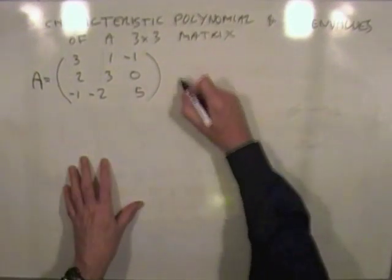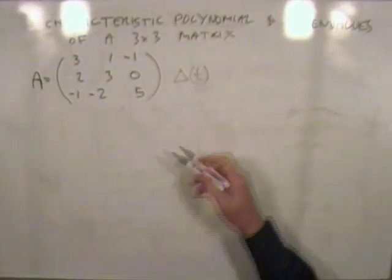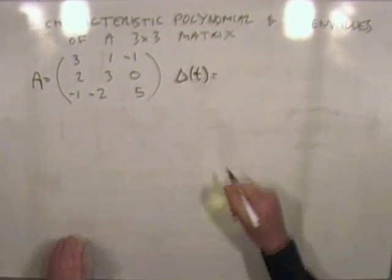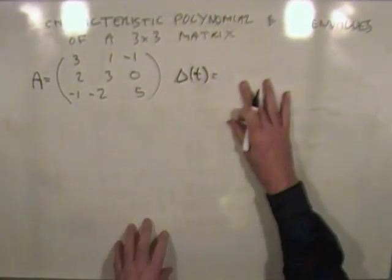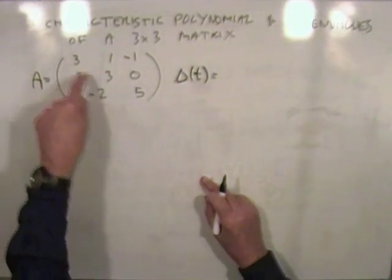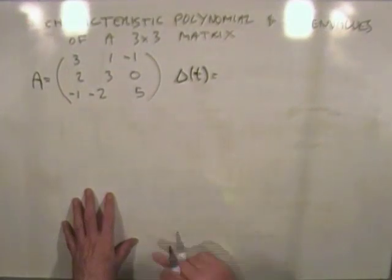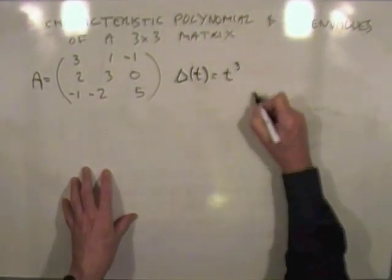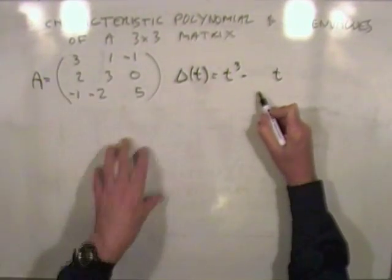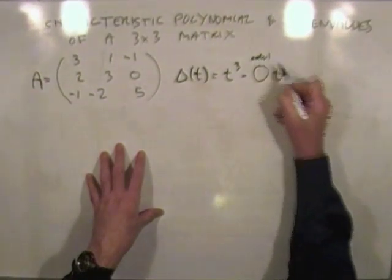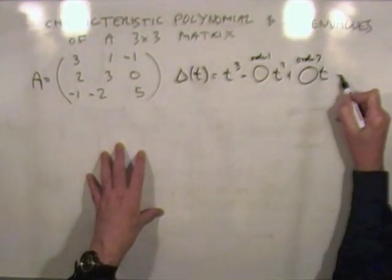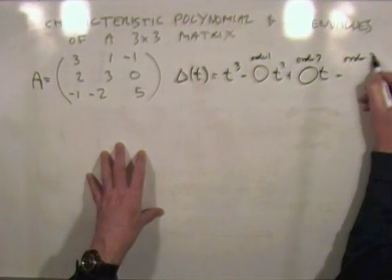The second method is to use a formula where the characteristic polynomial is made up of coefficients that come from the principal minors of the matrix — that's all the minors based on the main diagonal. For a three by three matrix, the characteristic polynomial looks like: t cubed minus the sum of principal minors of order one times t squared, plus the sum of principal minors of order two times t, minus the principal minor of order three.